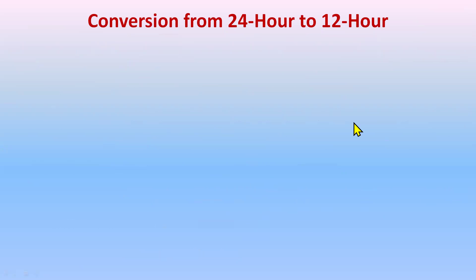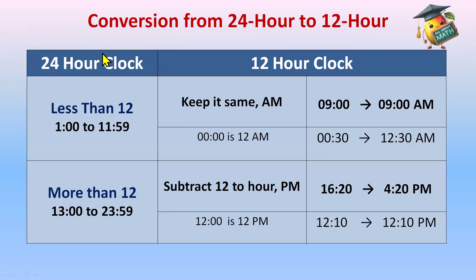Conversion from 24 hour clock to 12 hour clock. For that we have a table. We are going to convert 24 hour clock to 12 hour clock. So first, if the numbers are less than 12, keep the numbers same and write A.M. Like 9 is less than 12, so 9 A.M.